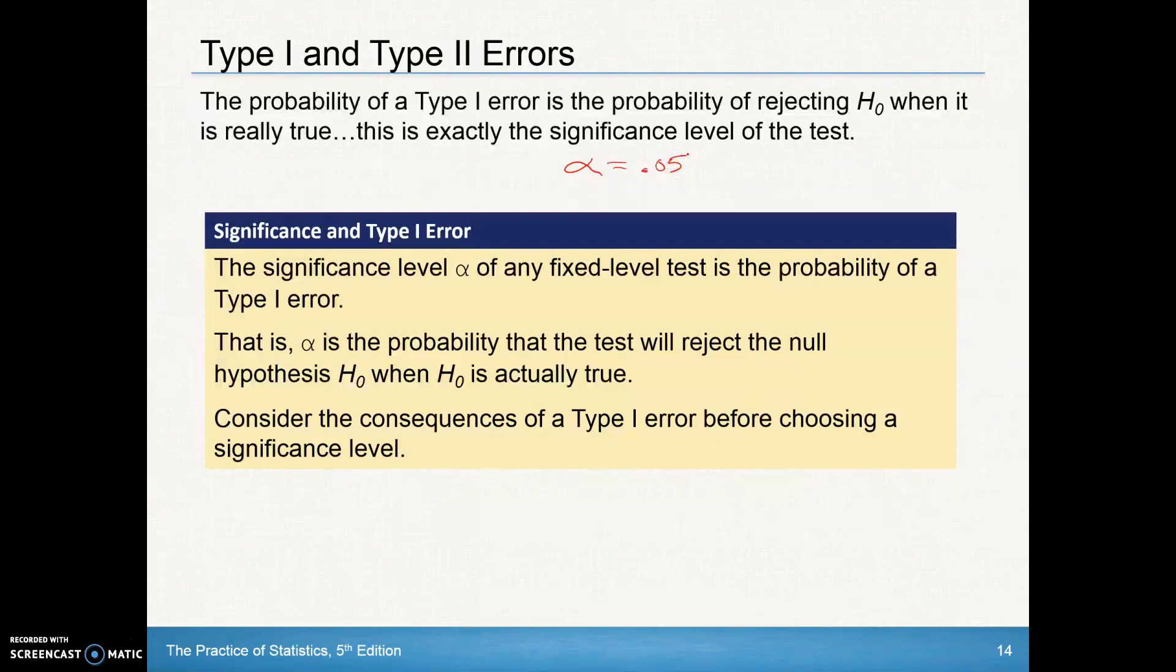That's the most common that we have. And that's kind of what we've been using in our previous chapters, is that 5% significance level when determining statistical significance.